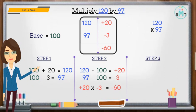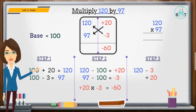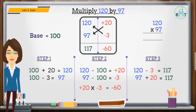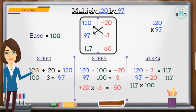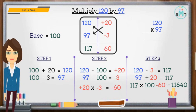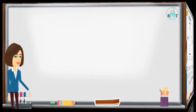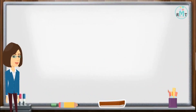Step 3: now we subtract 3 from 120, or we add 20 with 97 — we get the same answer, which is 117. Next, we multiply the left-hand digit, which is 117, with the base and subtract the right-hand side digit to get the final answer. So the final answer is 11,640.